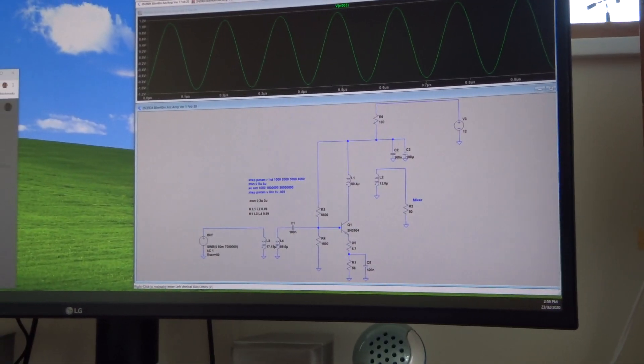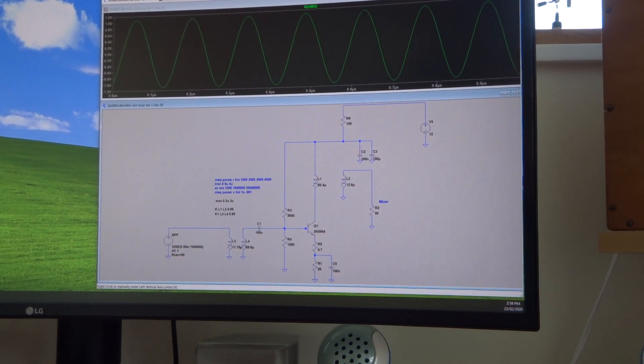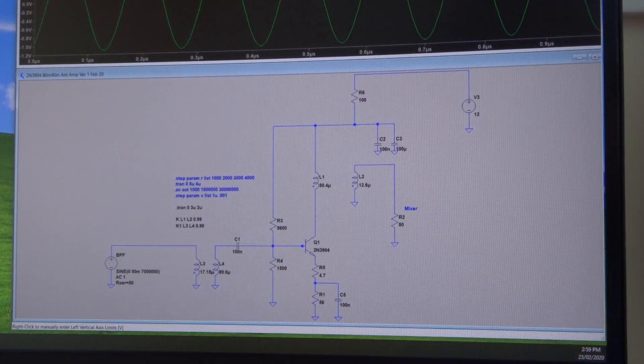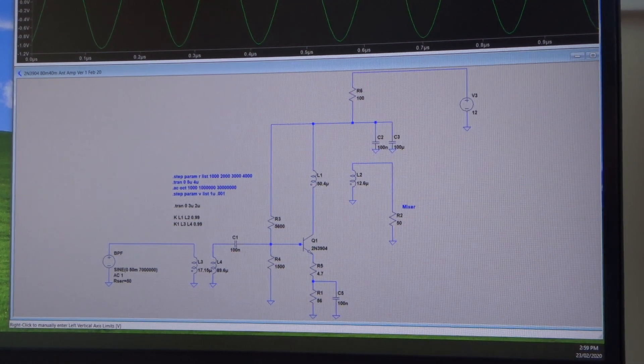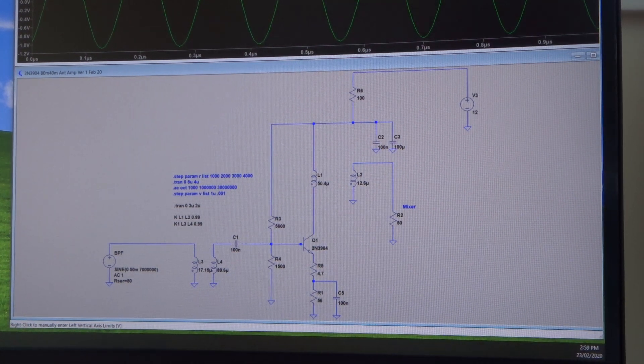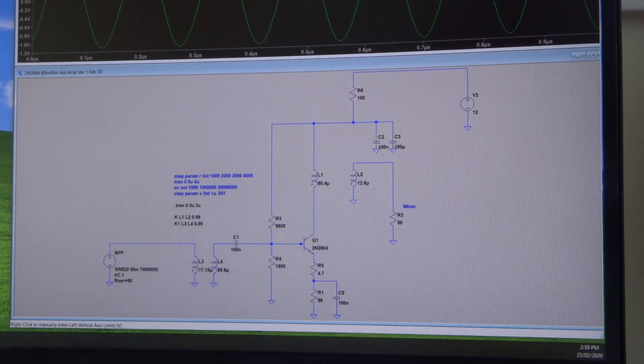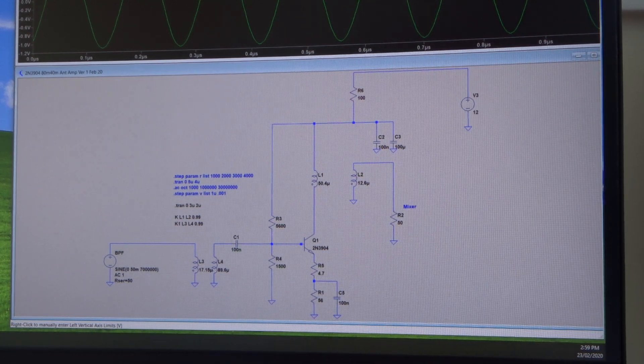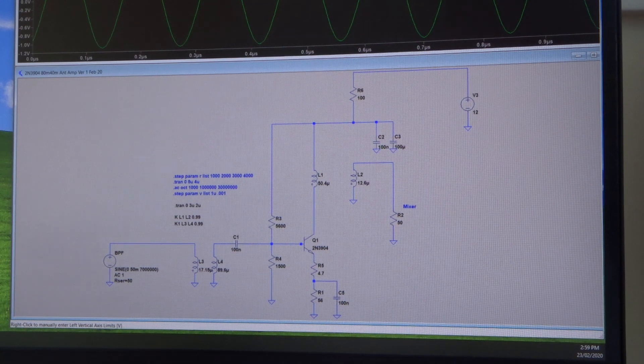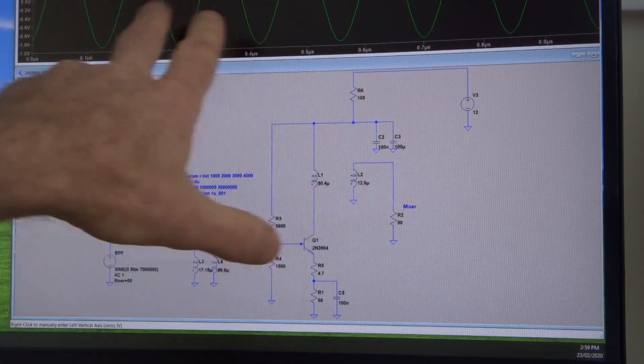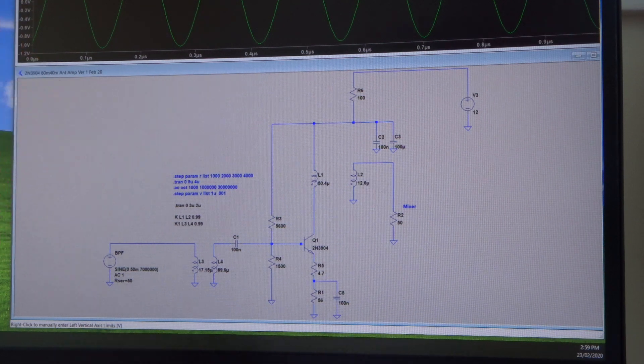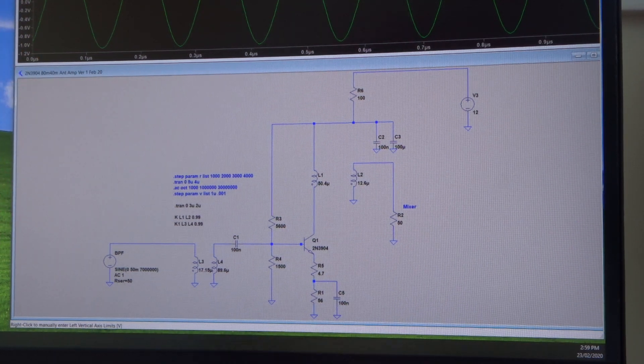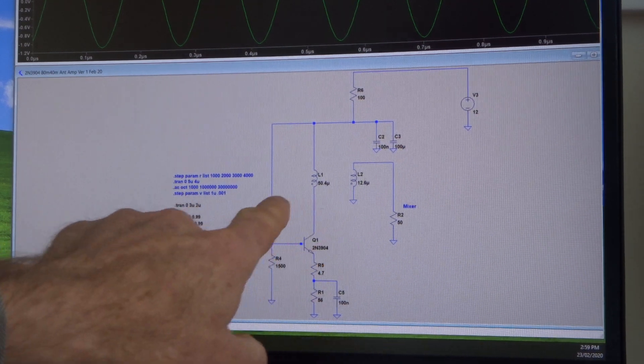Having said all that, just for interest, that's the LT Spice that I typically use to play around and validate at least in simulation what the circuit's going to do before committing it to solder. And the good thing is, in terms of what I'm seeing here and on the scope, there's a very close correlation which is great.